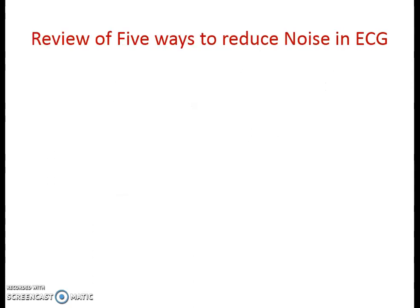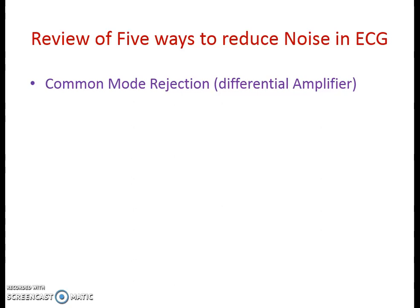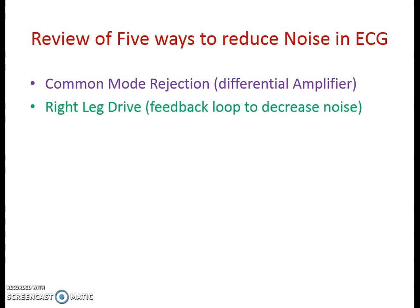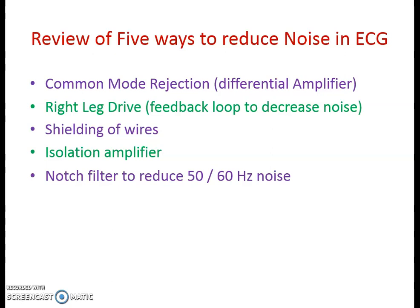Looking at the five strategies used to reduce noise in the ECG machine: first is common mode rejection — by using the differential amplifier and instrumentation amplifier we can reject the common mode signal. Second is the right leg driver, in which we send part of the signal back to the patient itself. Third is shielding of the wires. Fourth is using the isolation amplifier. And the fifth additional circuit used in the ECG machine is the notch filter, which also helps to reduce the 50 Hz or 60 Hz noise. By using these different strategies, we can reduce the noise in every ECG machine.